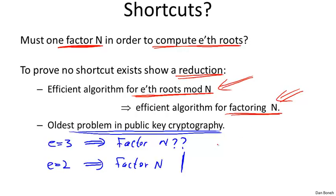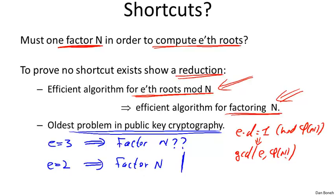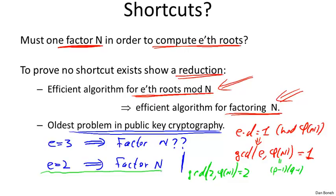Unfortunately, if you think back to the definition of RSA, that required that e times d be one modulo phi of n, which means that e necessarily needs to be relatively prime to phi of n. E is invertible modulo phi of n, but phi of n equals (p-1)(q-1), and since p and q are both large primes, (p-1)(q-1) is always even. As a result, gcd(2, φ(n)) equals two, so the public exponent two is not relatively prime to phi of n, meaning e equals two cannot be used as an RSA exponent.